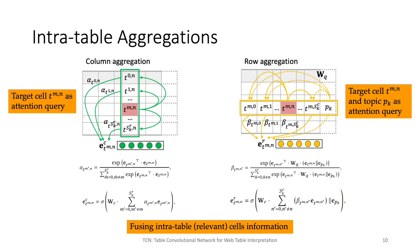For extracting contextual information inside the table, we propose two attention-based aggregation modules for aggregating cells of the same column and same row as the target cell. In the column aggregation module, we use the target cell highlighted in red as the query to attend on other cells of the same column, obtaining the column aggregated embedding. In the row aggregation module, we use both the target cell and the page topic entity — shown as a dashed column appended to the right side of the table — as the query to attend on other cells of the same row. Including the page topic entity accounts for different types of cell values across the same row. In this way, we summarize all related cells inside the table into the column aggregated embedding and the row aggregated embedding.